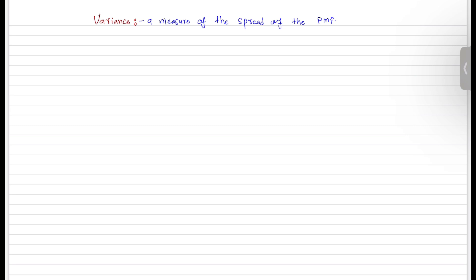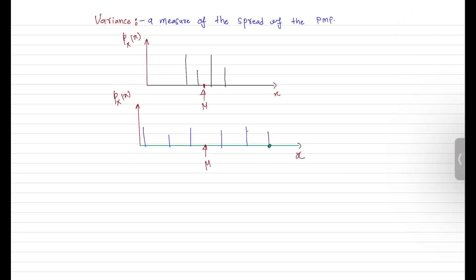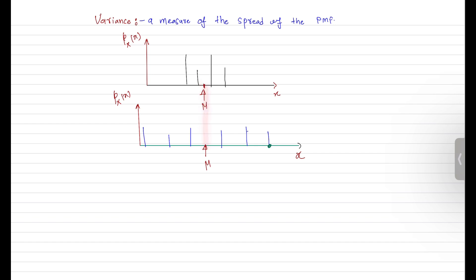Let's first try to get a sense of this variance. Let's consider these two probability mass functions, and let's assume that these two PMFs have the same expected value or mean. The difference between the first and the second probability mass function is that the second probability mass function is more spread out than the first.